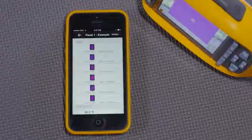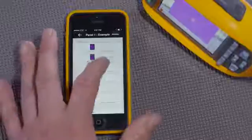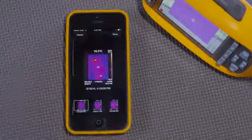And now Fluke Connect, because it saved those measurements to panel 1, will have all the thermal images under panel 1's equipment record.